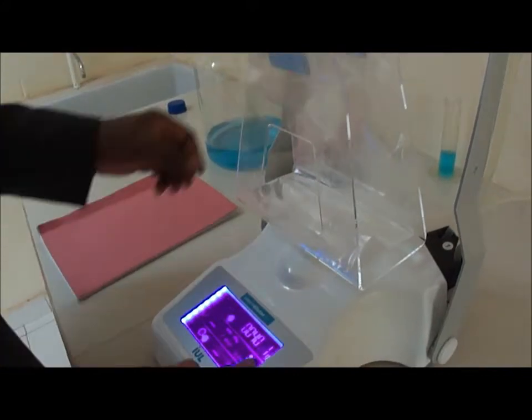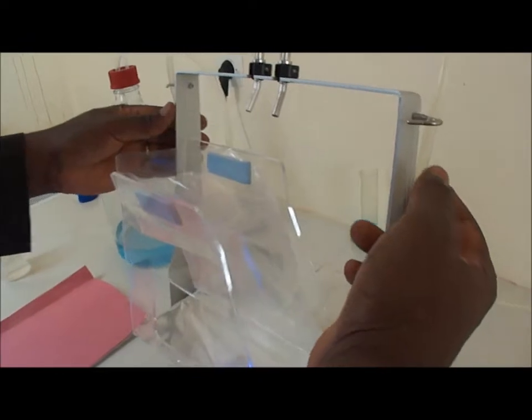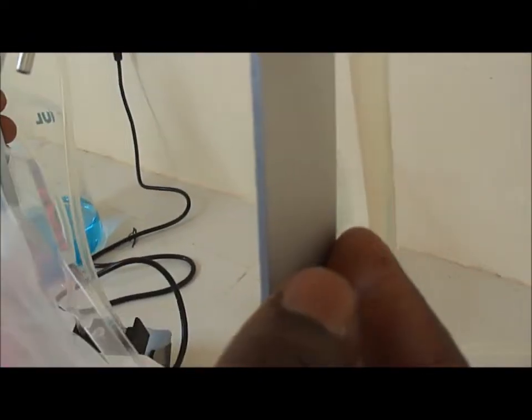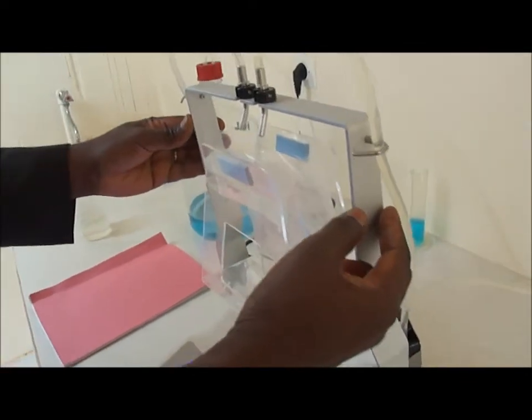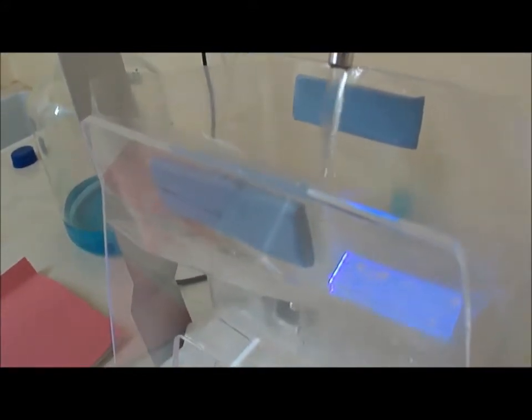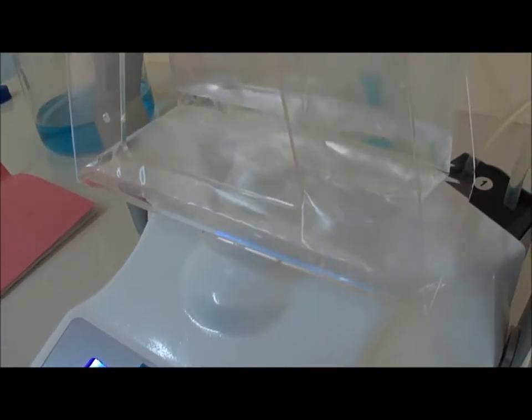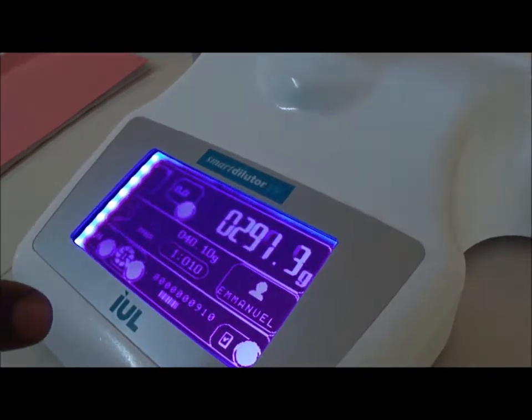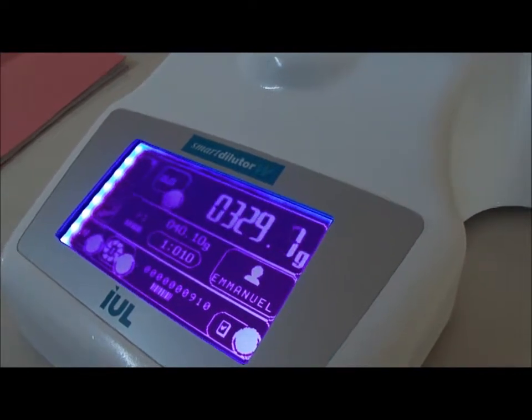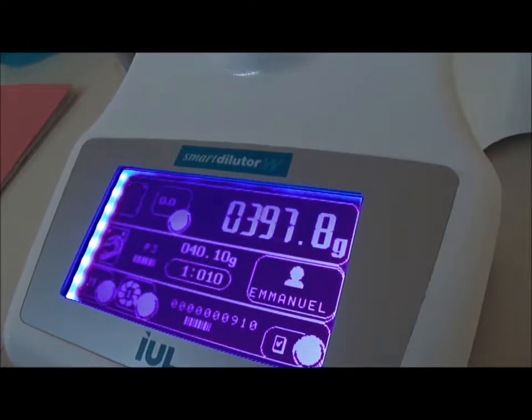To trigger, to start the dilution process, I just pull forward the frame, the metallic frame. And then, at a certain moment, it starts pumping and putting water inside. Look at the screen, it's changing, 200 now, 240, 250, 260, etc. It should stop somewhere around 400 grams. Yeah, that's it.